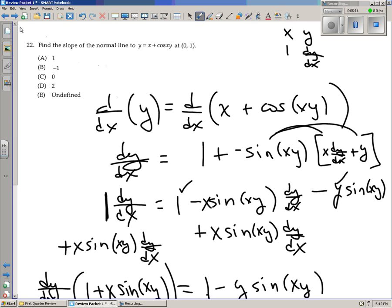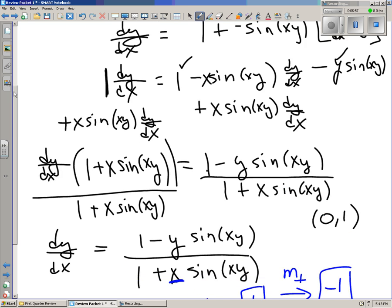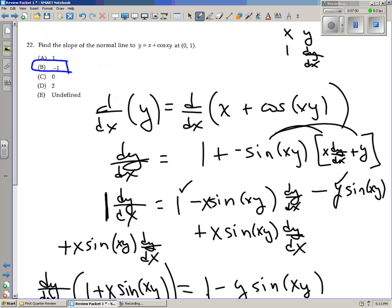And so we get dy over dx is this monstrosity. 1 minus y sine of xy. Unfortunately, there's no simplification we can do here. It's over 1 plus x sine of xy. Now, we have to find the slope of the normal line at 0, 1. So 0, 1 makes this kind of easy. First of all, if you plug in x equals 0 here, this term vanishes. So on the bottom, we just get a 1. So that's nice. We can deal with the numerator now. So it's 1 minus 1 sine of 0 times 1, which is just 1 minus 1 sine of 0. Sine of 0 is 0, so this is just 1. Wow, that works out to just be a 1. And then the perpendicular slope would be the reciprocal of 1, which is negative 1. So here we are at negative 1 is the answer. Boy, a lot of work for just a little answer like that.